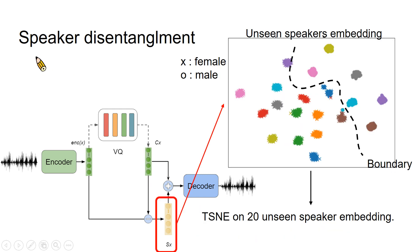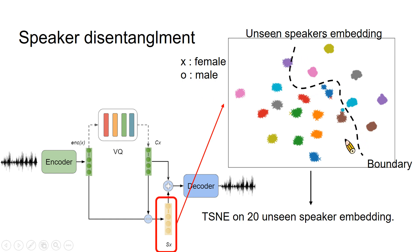We also conduct an experiment on speaker embedding. We extract 20 unseen speakers' embeddings from our testing set. X marks denote female and O marks denote male speakers. There is a clear boundary between female and male, and different speaker embeddings are separated very well, indicating that our speaker embedding extraction is very successful.